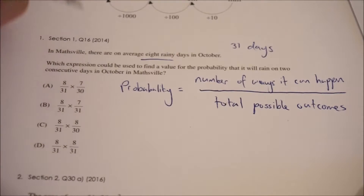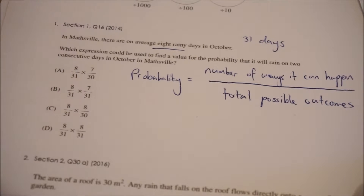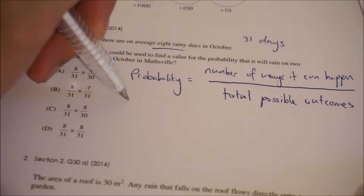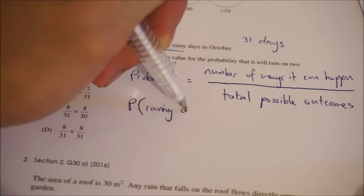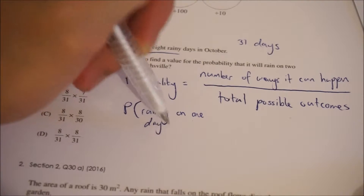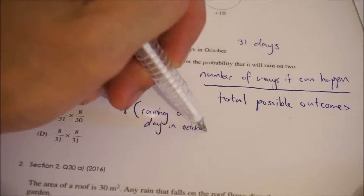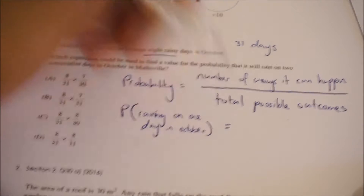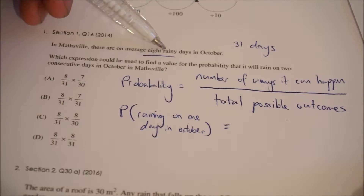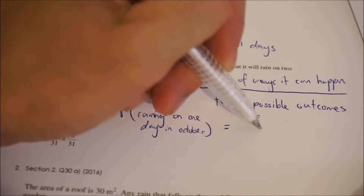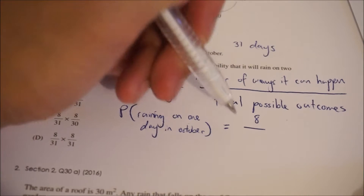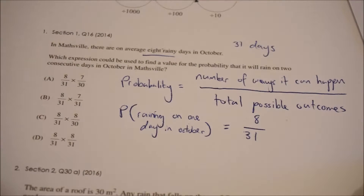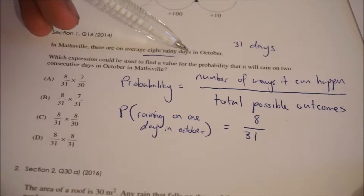We're trying to find the probability of it raining on two consecutive days. Let's first find the probability that it rains on one day in October. There are eight rainy days, so there are eight possible ways it can rain. In total, October has 31 possible days, so those are all our possible outcomes. Therefore, eight over 31 is the probability that it will rain on any given day in October.